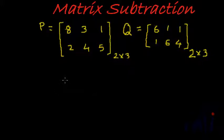Now we are given two matrices, very similar to the last video, P and Q, both of order 2 by 3. Now we want to subtract Q from P. Essentially we want to find out what will be P minus Q.